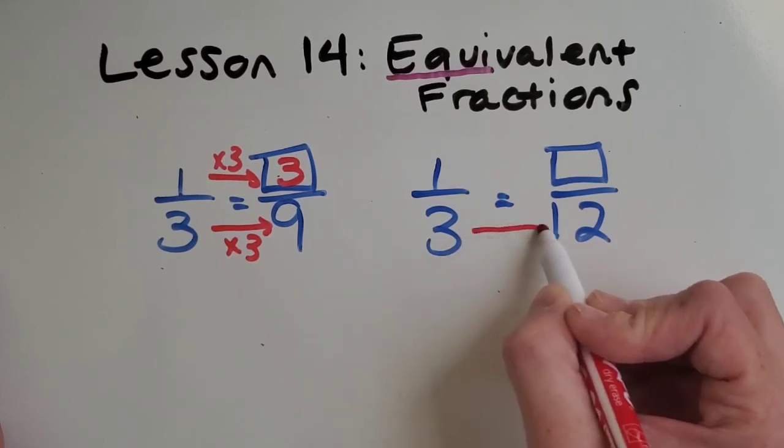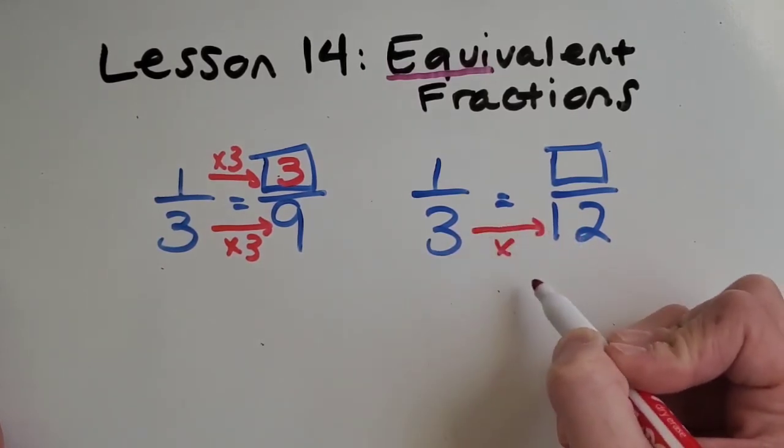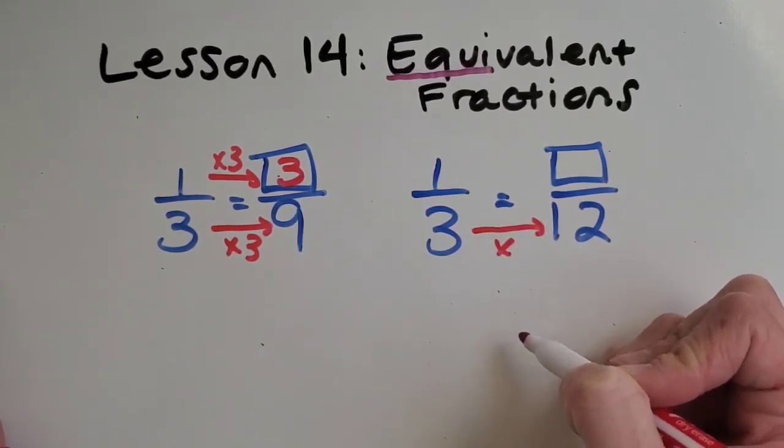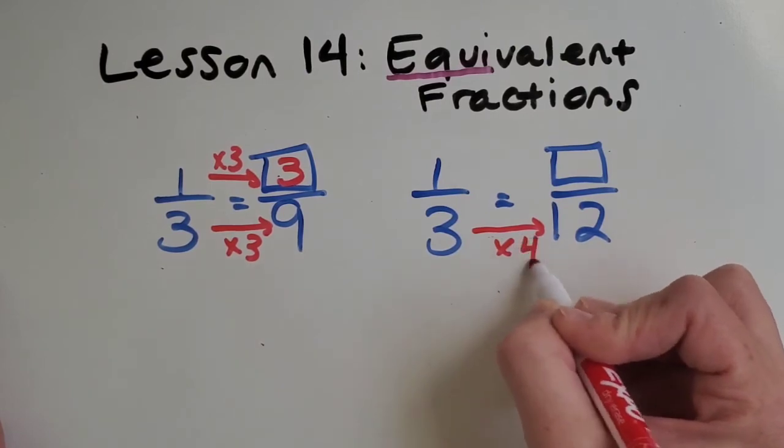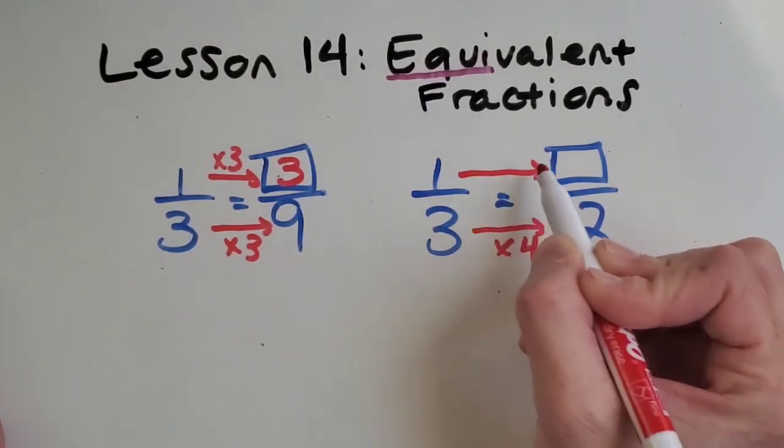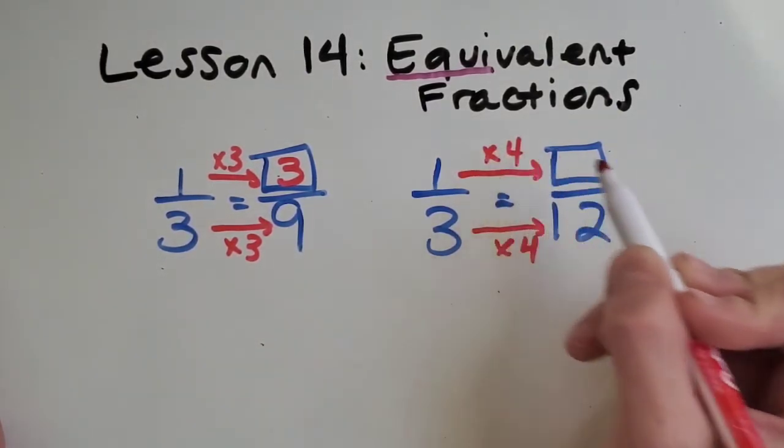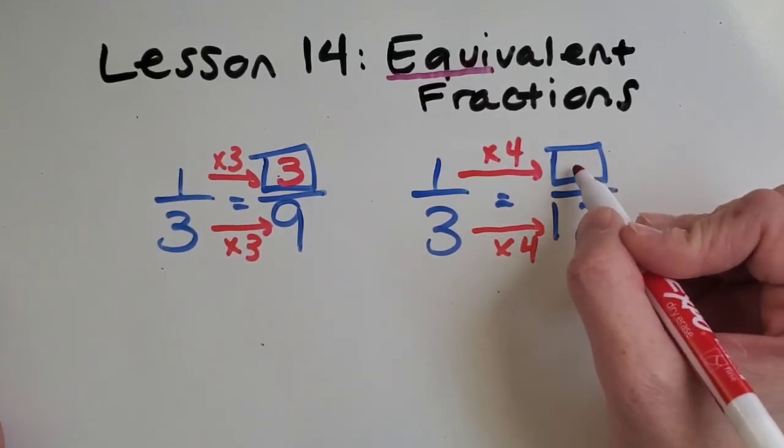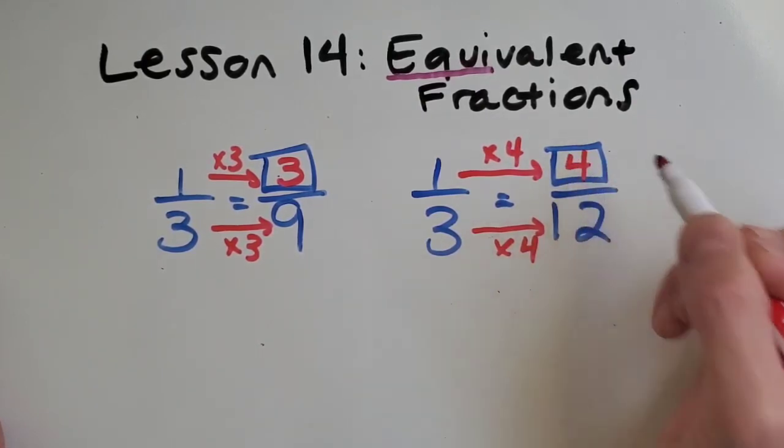Let's try it down here. Three times what equals 12? Oh, good. It's four. So we're going to do the same thing to the top number. What is one times four? Four. Good job.